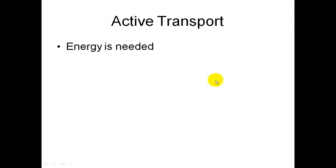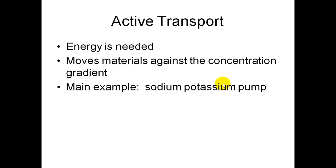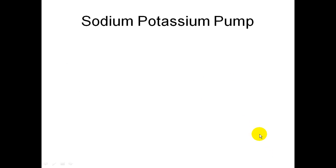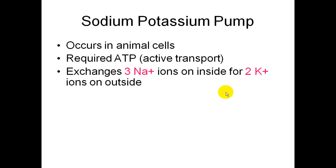For active transport, energy is needed in the form of ATP. Active transport moves materials against the concentration gradient, meaning from a low concentration to a high concentration. The main example is the sodium-potassium pump, which occurs in animal cells. It requires ATP, and it involves the exchange of specifically three sodium ions on the inside for two potassium ions on the outside.